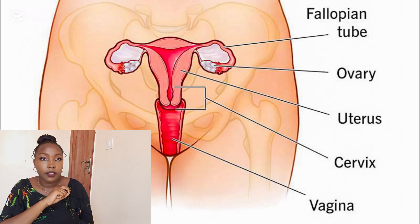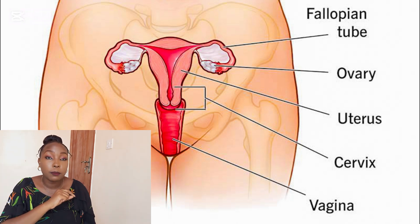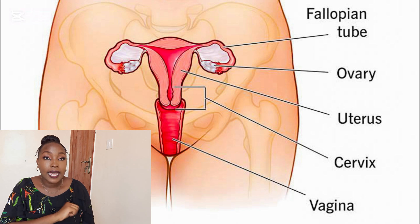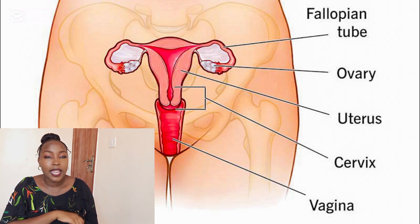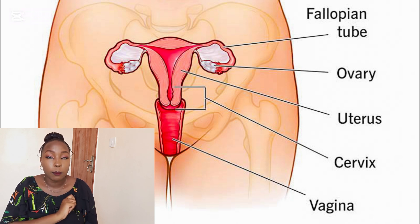Now let's have a look at the internal female genitalia. We are going to start from the organs at the top all the way to the organs at the bottom. We have the ovaries — two oval-shaped organs on either side of the uterus. Their major function is to produce eggs or ova during ovulation and to secrete the hormones estrogen and progesterone.